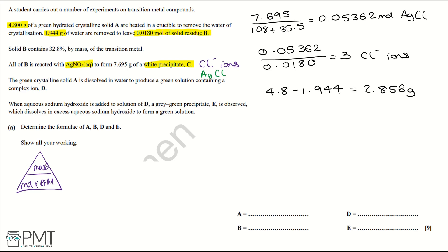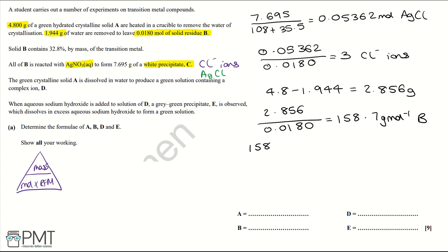Using the equation triangle, we do 2.856 divided by 0.0180 (the moles of B), giving a relative formula mass of B of 158.7 grams per mole. We know we have three chlorines, so we do 158.7 minus 3 times 35.5, giving 52.2 grams per mole, which corresponds to chromium (Cr). So the formula of B is CrCl₃.